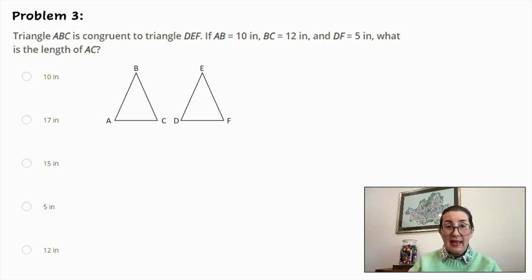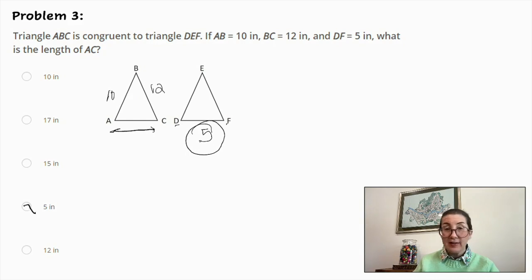So let's take a look. AB is equal to 10 inches, and BC is equal to 12 inches, and DF over here is equal to 5. And we're looking for the length of AC. So DF is congruent with AC, so the answer will be 5 inches.